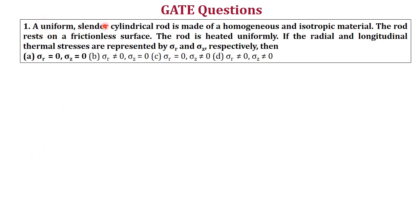In this GATE question, a uniform slender cylindrical rod made of homogeneous isotropic material rests on a frictionless surface and is heated uniformly. Radial and longitudinal thermal stresses are represented by sigma_r and sigma_z. The key point is 'frictionless surface' means no restriction. No restriction means no thermal stress — only strain. Therefore sigma_r and sigma_z are both zero, and the answer is option A.